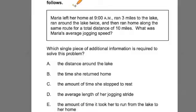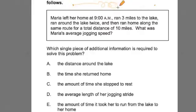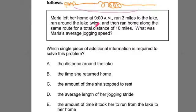In this picture I'm going to put the important information. Maria's going on a trip — she runs over hills and around the lake a couple of times, and then she returns home. On this trip, she's starting at 9am, and in total we're told that after going jogging around this whole thing, the total distance is 10 miles.